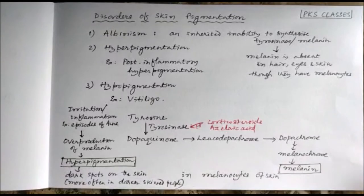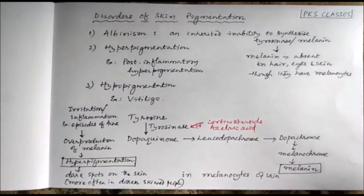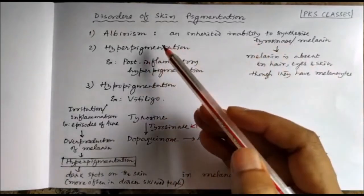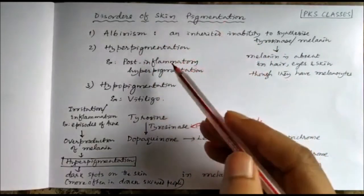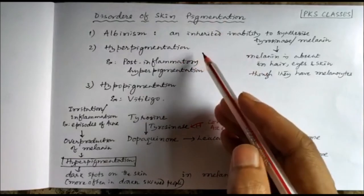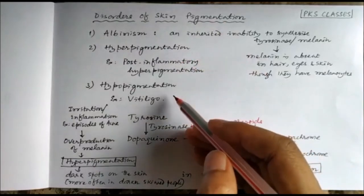Namaskar! Today we will study the disorders of skin pigmentation, and there can be three types of problems: one is albinism, second is hyperpigmentation, and third is hypopigmentation.